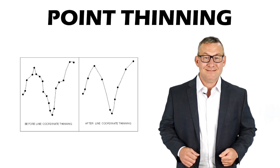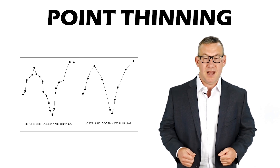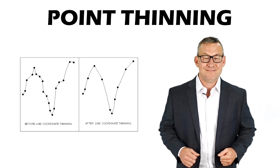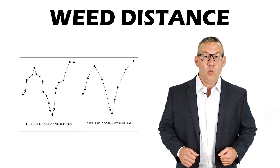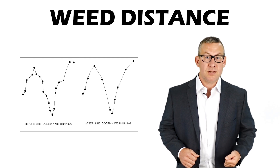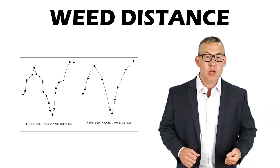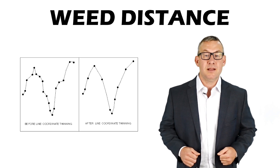Point Thinning removes vertices to reduce processing time and file size. Point Thinning methods often use a weed distance to reduce the number of vertices while maintaining the line shape.